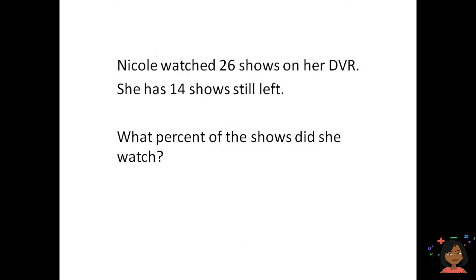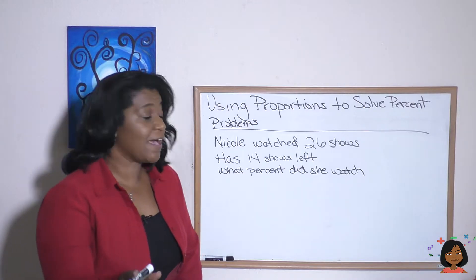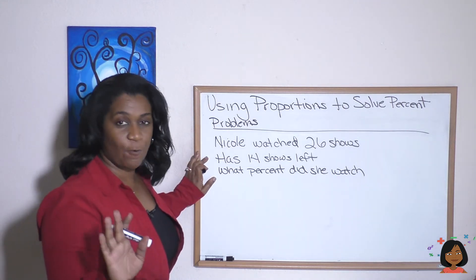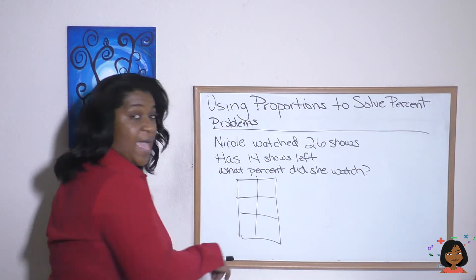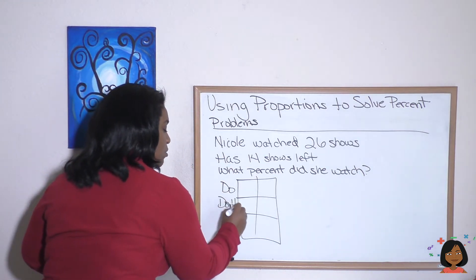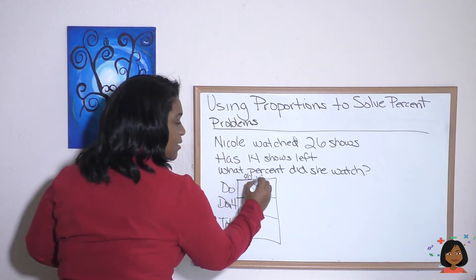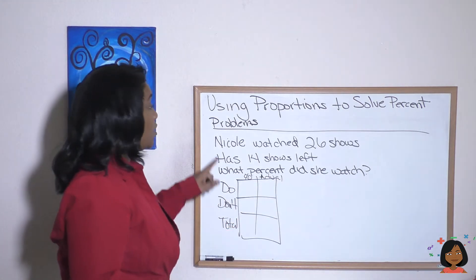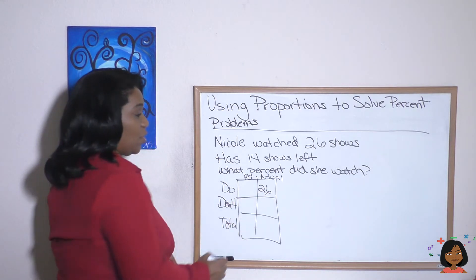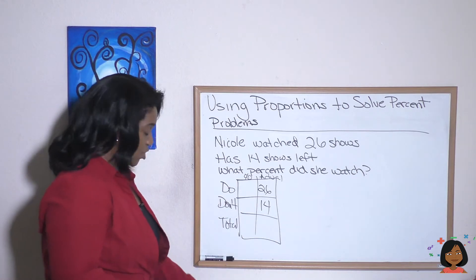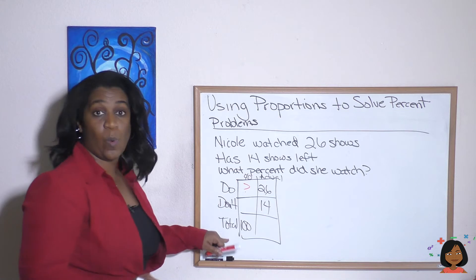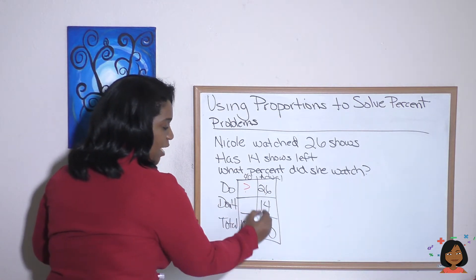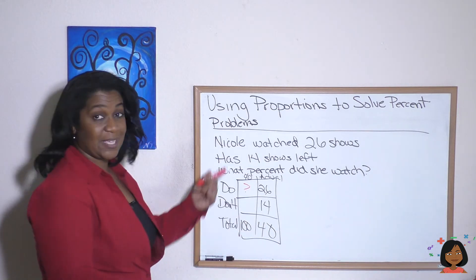Here's the last problem. Nicole watched 26 shows on her DVR and has 14 shows still left. What percent of the shows did she watch? We draw our ratio box with three rows and two columns — do, don't, total and percent, actual. Watched 26 shows goes in the do actual column; 14 left goes in the don't actual. The percent total is always 100. 26 plus 14 is 40 total shows.